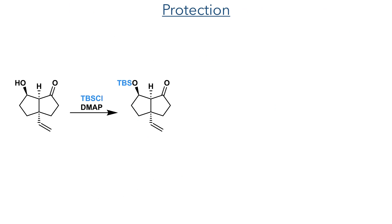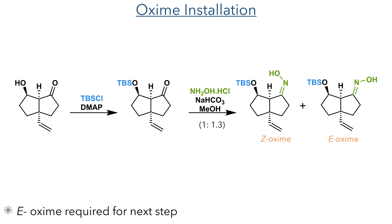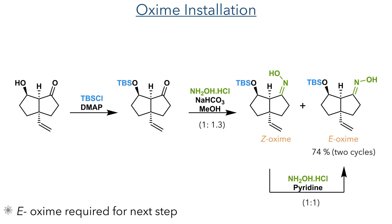With the chiral hydroxyl group now introduced, it was protected using TBS chloride and DMAP. The ketone was then reacted with hydroxylamine hydrochloride in methanol with sodium bicarbonate to form an oxime. This was formed in a 1 to 1.3 Z to E ratio; however, they found that only the E-oxime could take part in the next step. To overcome this, the Z-oxime was isomerised by refluxing it overnight in pyridine with hydroxylamine hydrochloride to generate the E-oxime with a 74% total yield over two cycles.